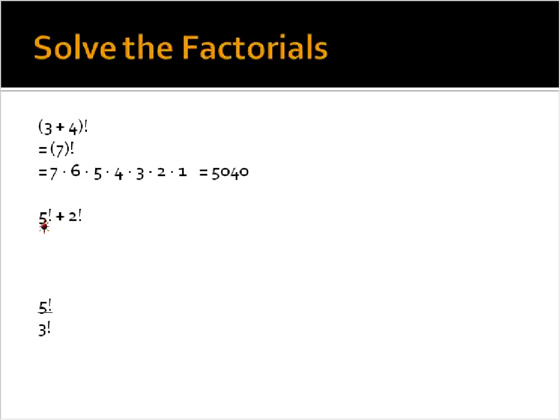When you have them like this, 5 and 2, you would actually solve each factorial and then add them together. Because we do multiplication before we do addition in the order of operations, and it's the same thing. Factorial of 5 is 120, and 2 is 2.